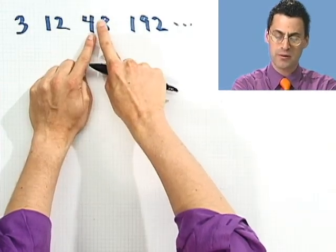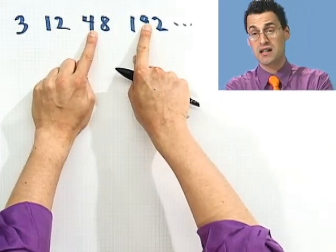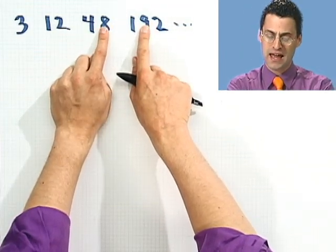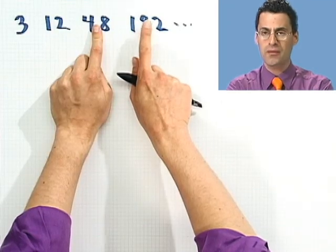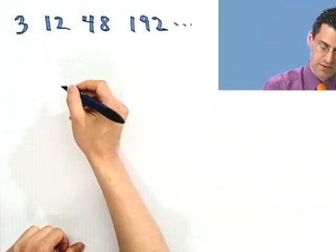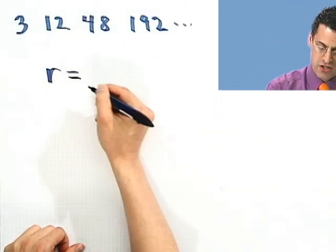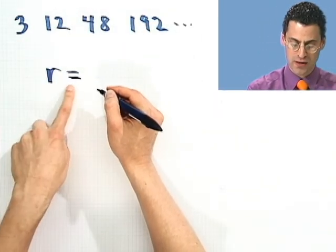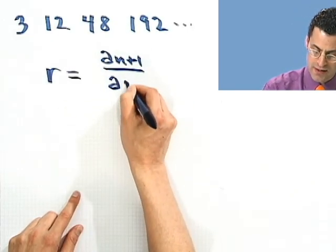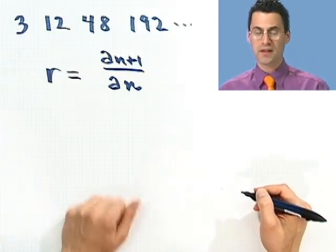So, how can I describe a geometric sequence sort of in general? Well, what property must it have? Well, it must have, in order for me to get the next term, I take the previous term and multiply by a constant number, a constant ratio. That means that if I take any two consecutive terms and divide this one into that one, the answer should always be the same. It should be that ratio.